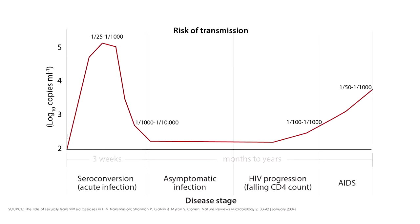If one looks at the schema of HIV infection, one will notice that the first few weeks to months is when we have the highest level of viral particles in the blood — viremia. It is during that period when one is most likely to transmit the infection. So if one has a number of partners during that time and has sex shortly after becoming infected, one is more likely to transmit the infection than when entering the asymptomatic period, which can go on for a number of years. It's those first few weeks or months that we are most likely to transmit the infection because we don't know we're infected.